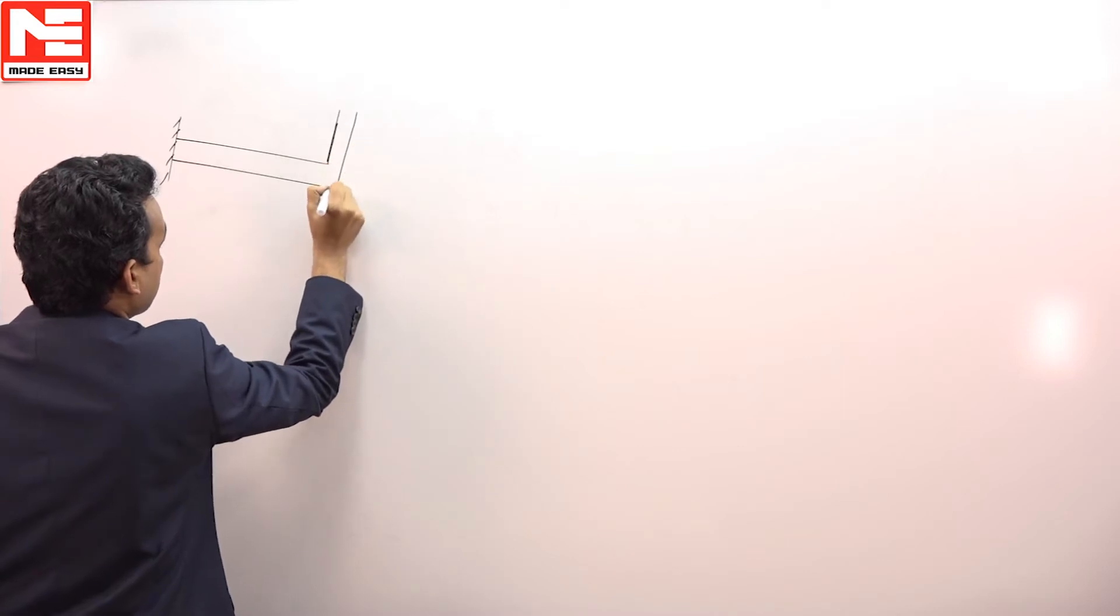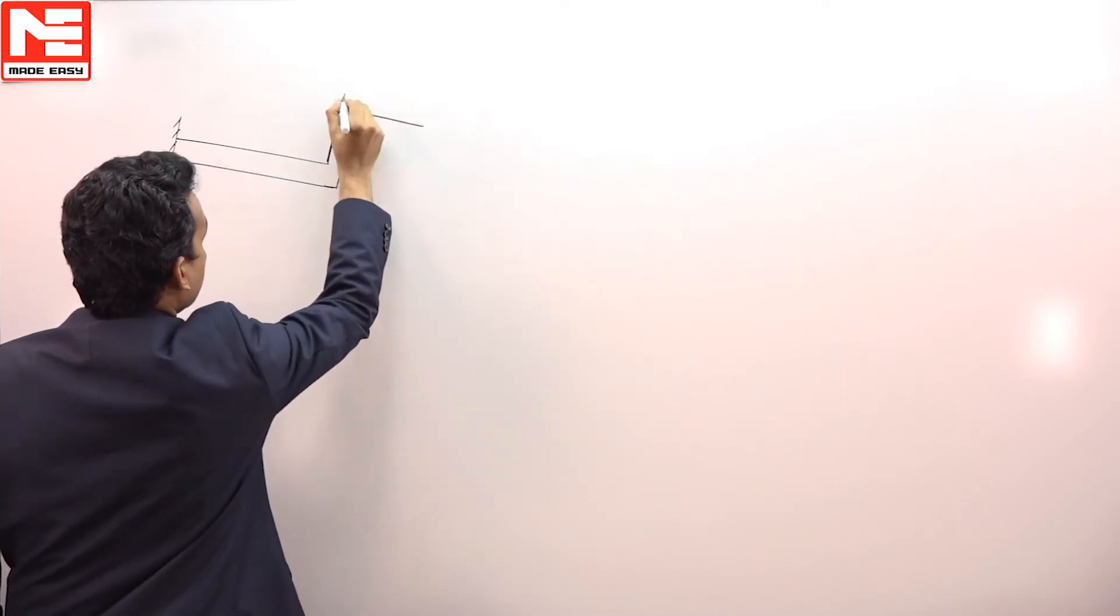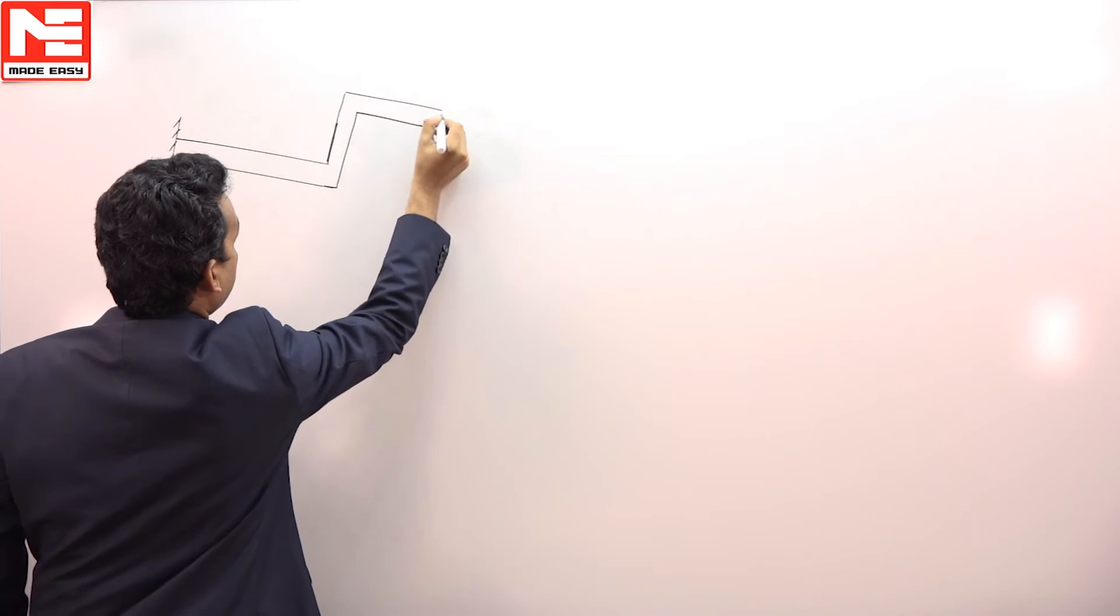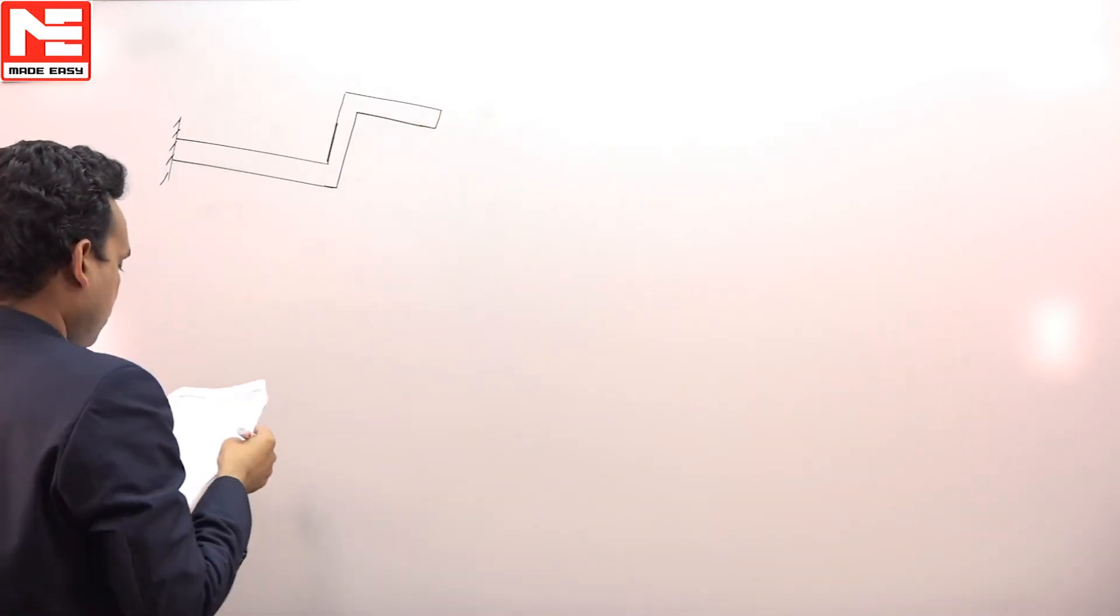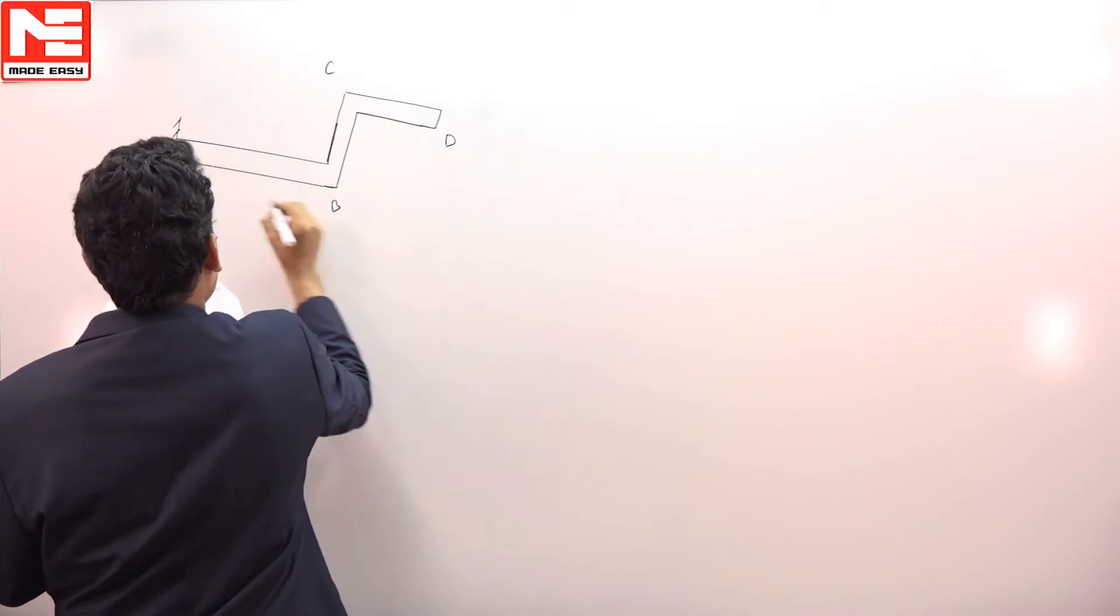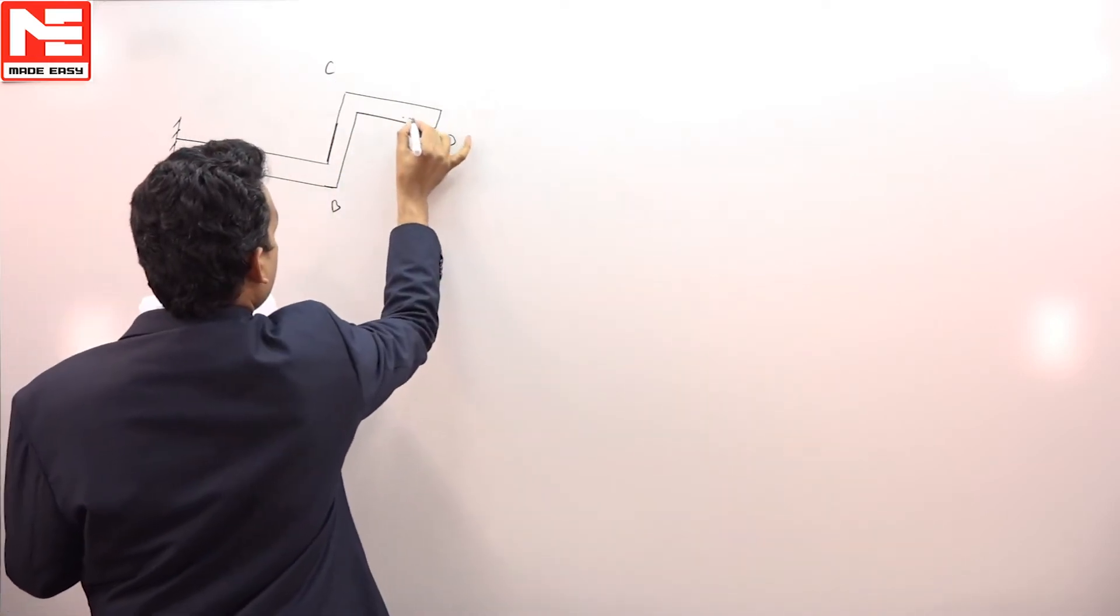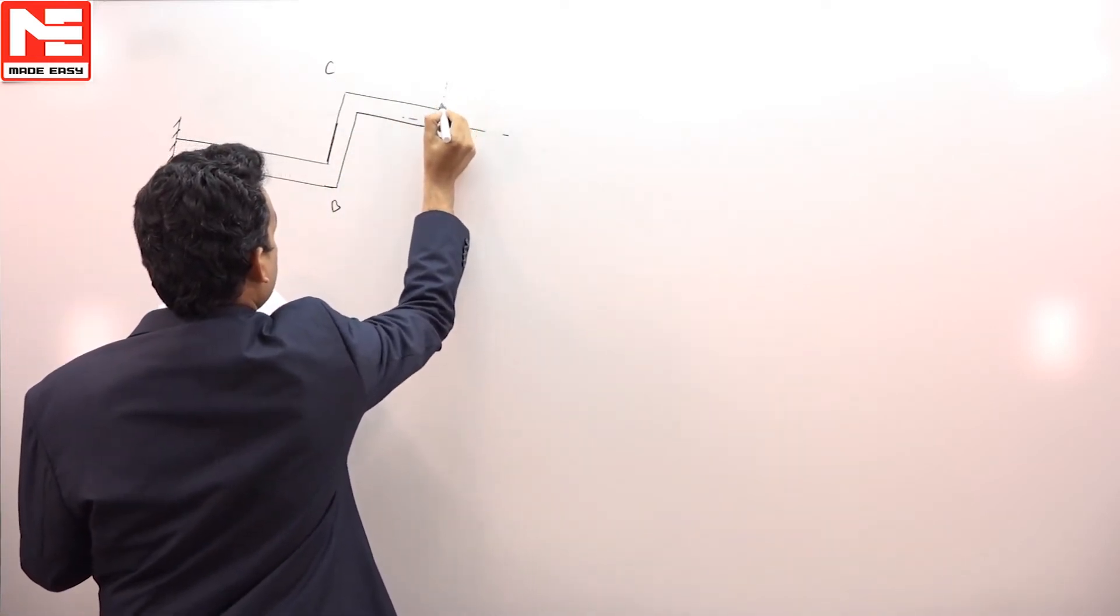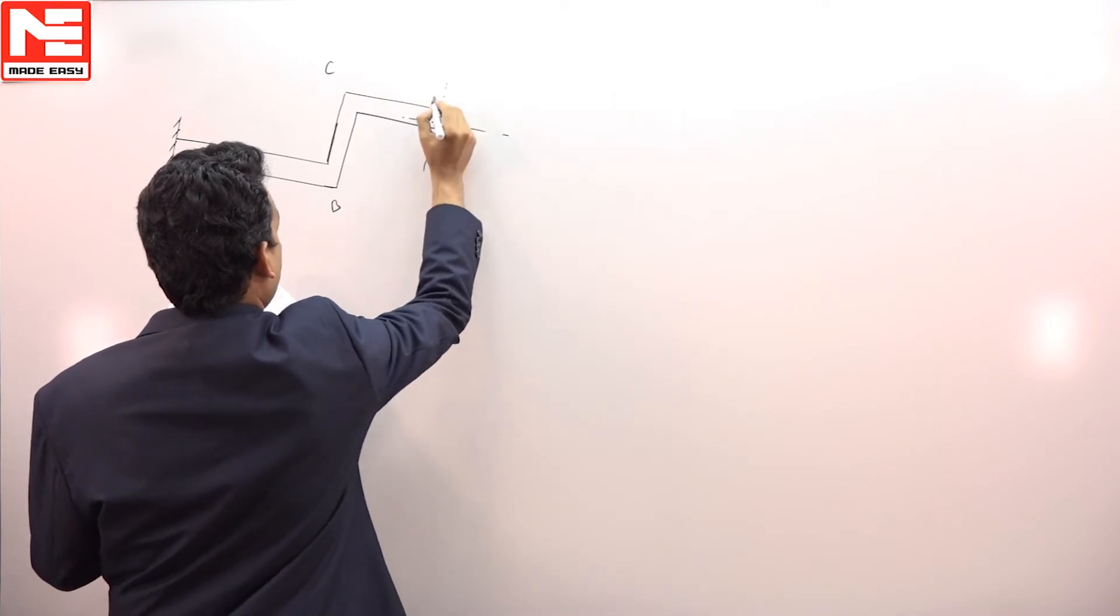This is the body we have given. This is basically a three dimensional diagram. This is point D, then this one is C, B, and A. These are the axes. Suppose at this point D there is a force of 400 Newton.